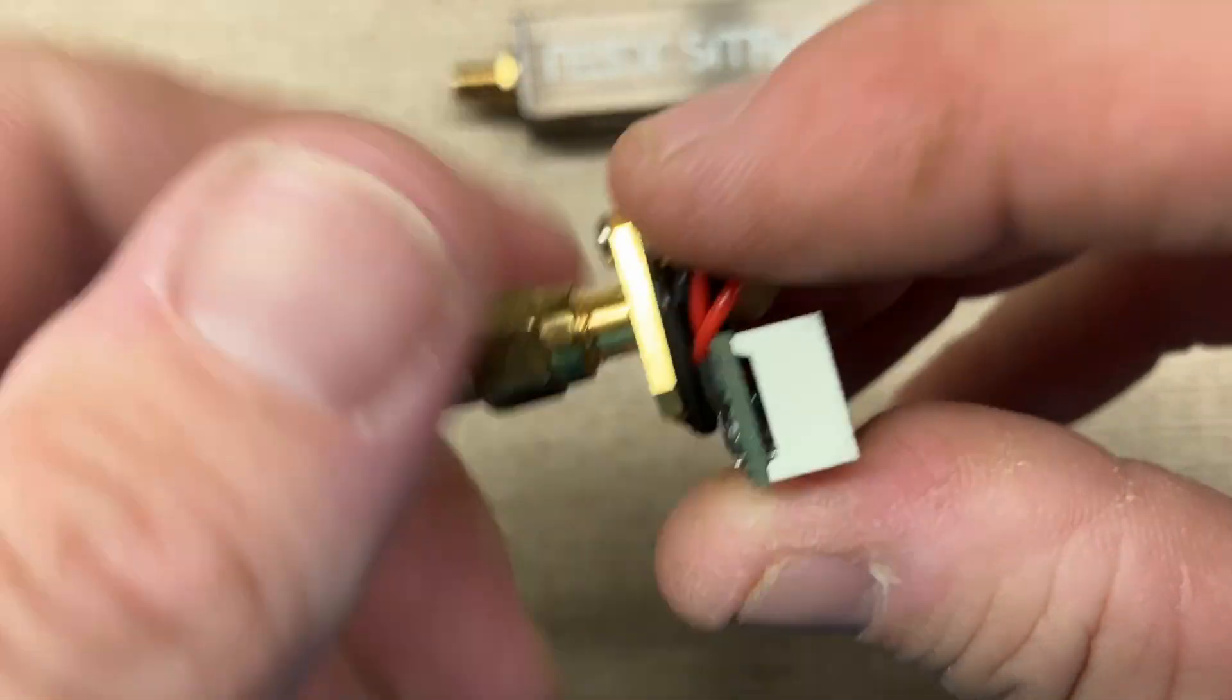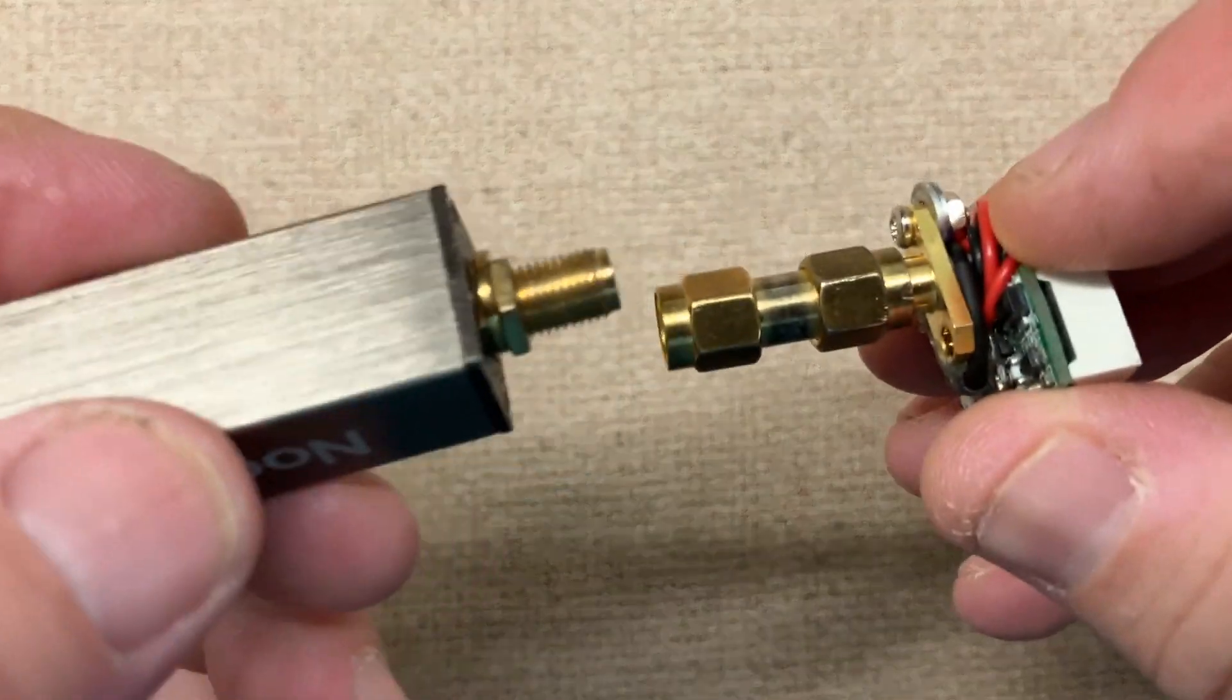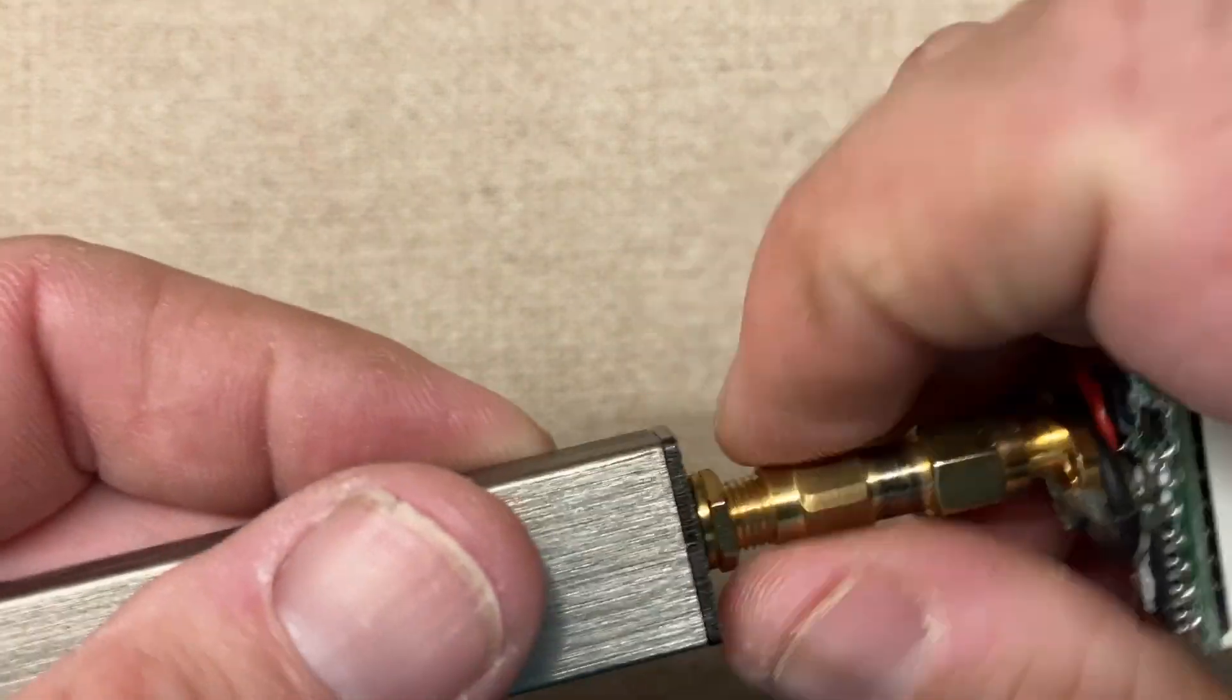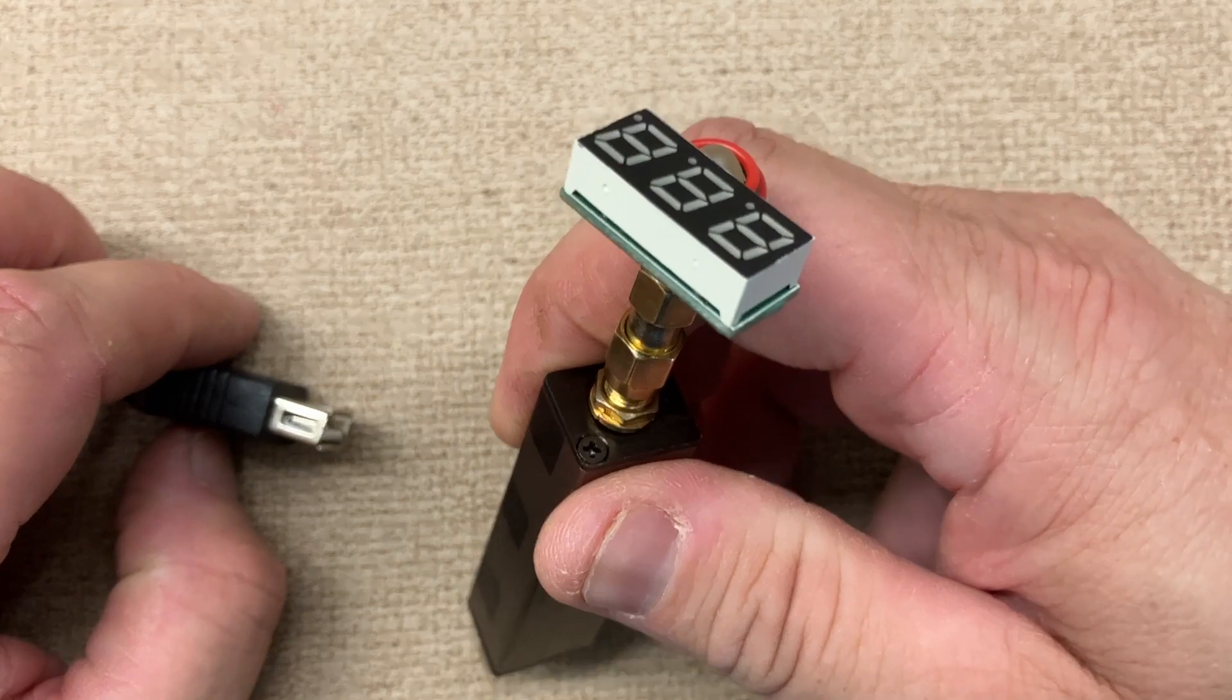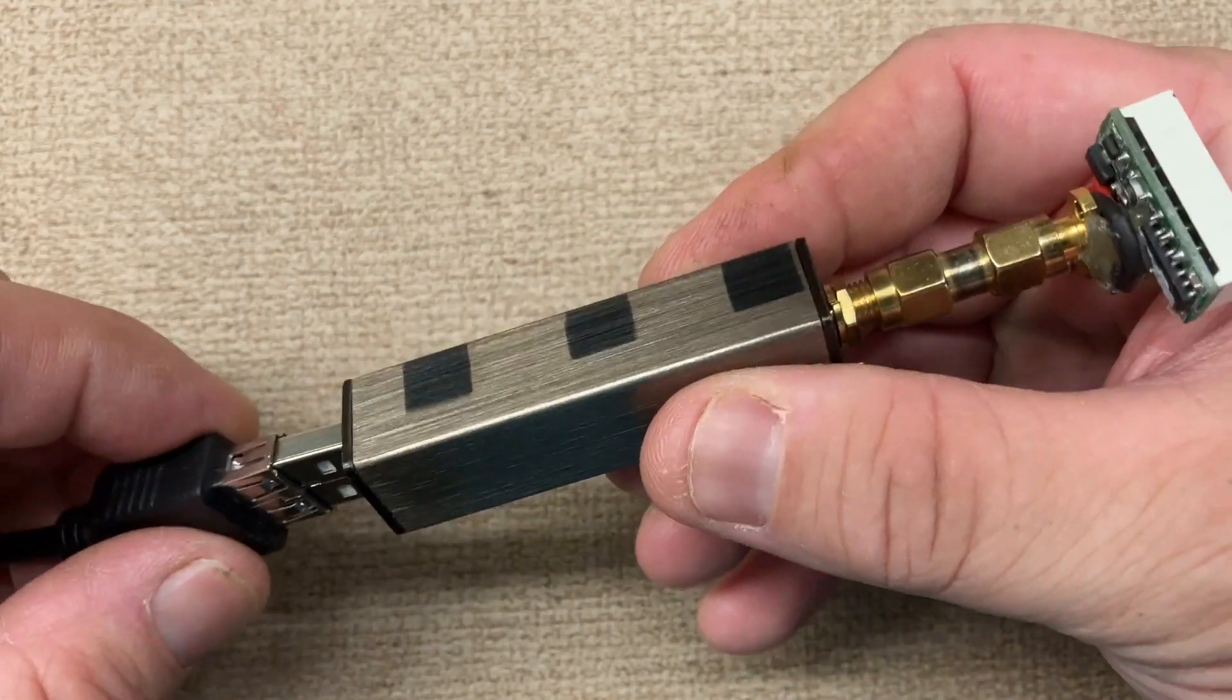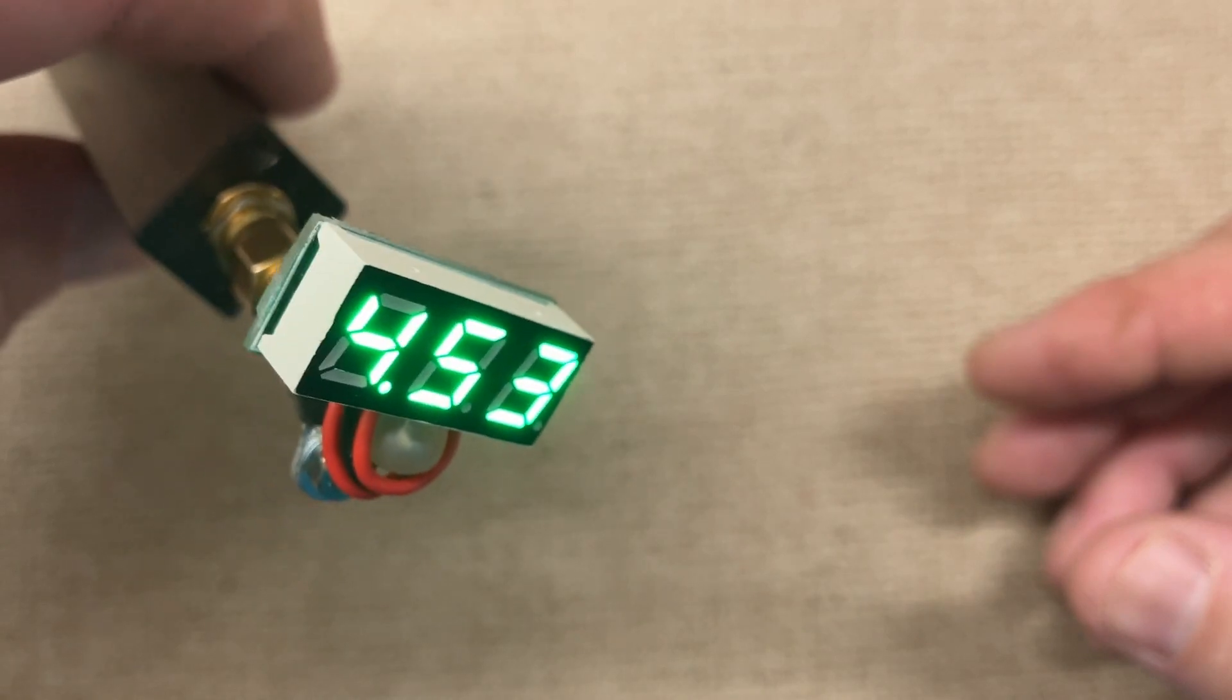So I can just screw this coupler on, put that in there, screw that on. Now I just have this wire - we're just going to plug this into the Pi for power. It's a nice little way to show you what the voltage is coming out of the bias-T.